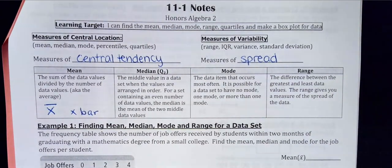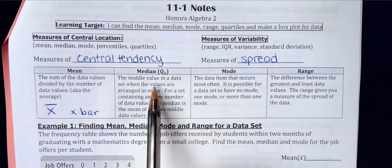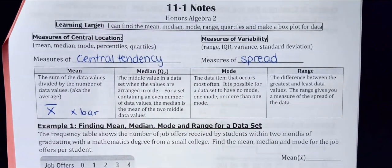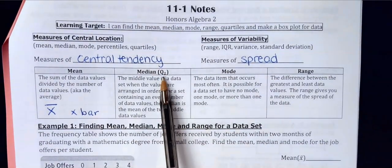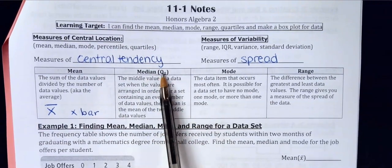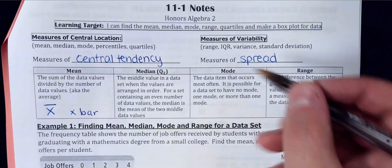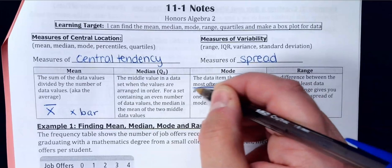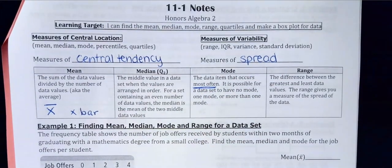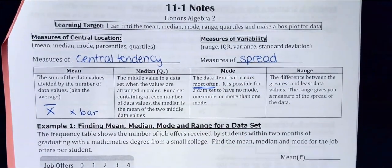The median is the middle value in the data set. You count in from the ends, but you have to arrange the data in order from least to greatest before you do that. The median is also called Q2, which stands for the second quartile — those two terms are interchangeable.